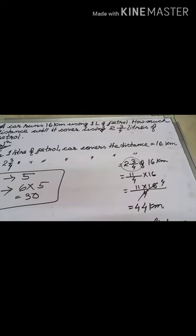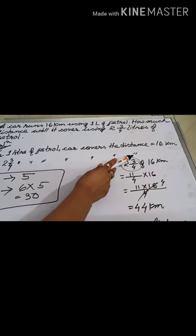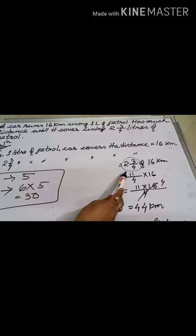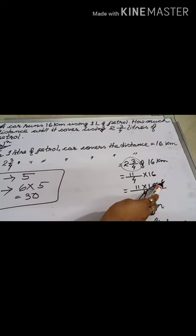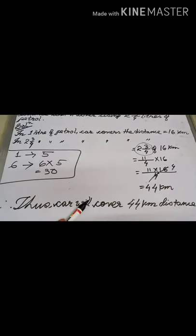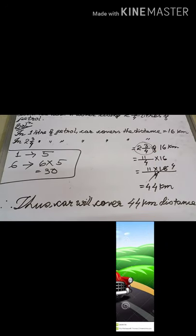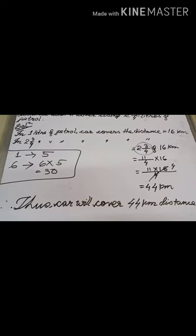It is a multiplication, but since it is a mixed fraction you must convert it to an improper fraction first. 4 × 2 = 8, plus 3 = 11, so it becomes 11/4. Now 11/4 × 16: numerator 11 × 16 = 176... 4 × 11 = 44. So the car will cover a total distance of 44 kilometres.